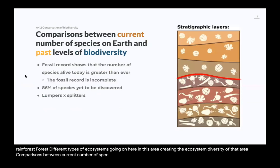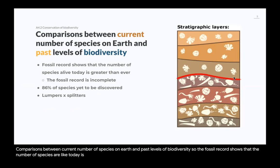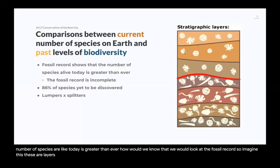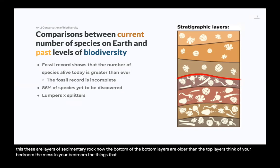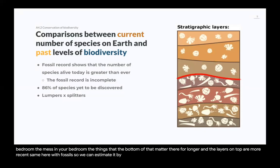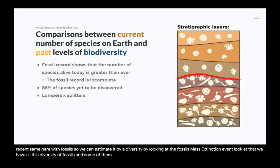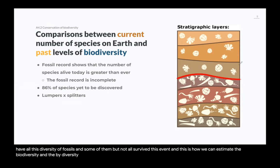Comparing current number of species on Earth and past levels of biodiversity: the fossil record shows that the number of species alive today is greater than ever. We look at layers of sedimentary rock — the bottom layers are older than the top layers. We can estimate biodiversity by looking at the fossils. A mass extinction event appears as a drop where all this diversity of fossils, some but not all, survive the event. This is how we estimate biodiversity loss from extinction events.